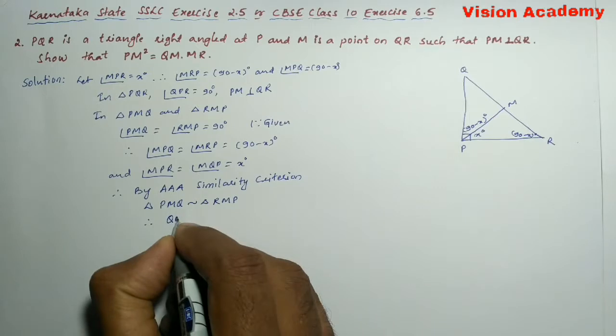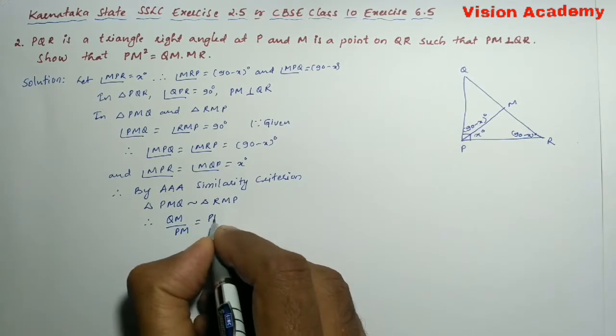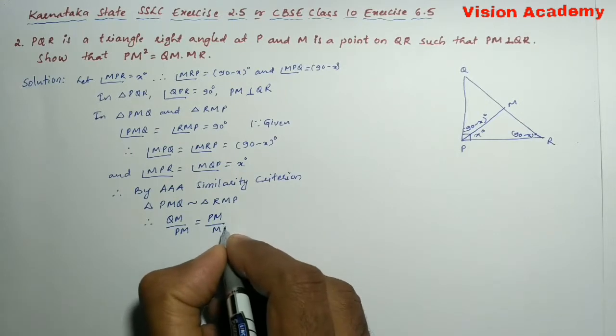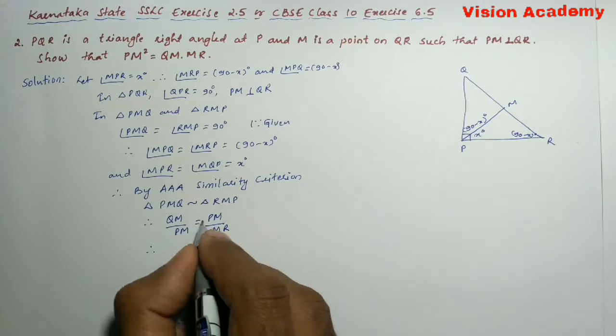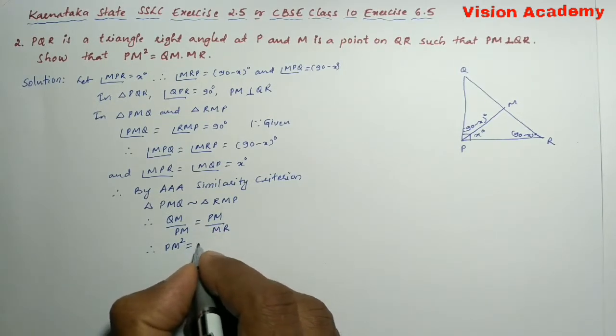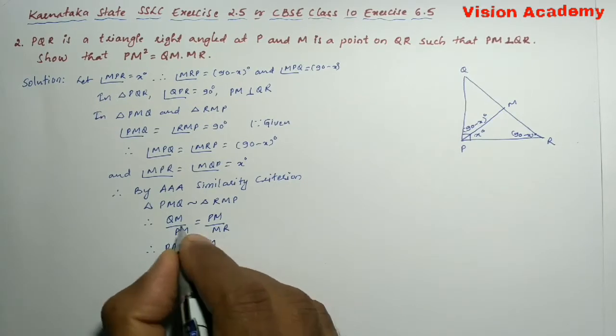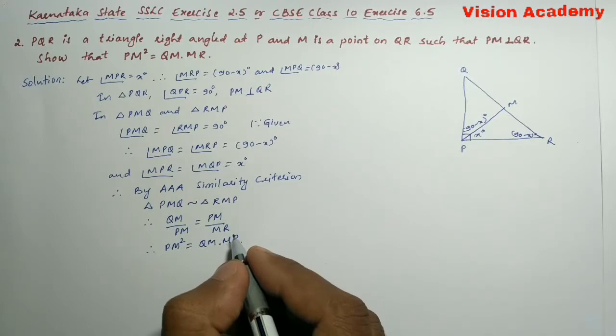Therefore we can write QM divided by PM is equal to PM divided by MR. So when we cross multiply, we will get PM into PM, which is PM square, is equal to QM into MR. Hence the proof.